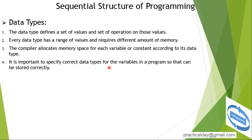It is important to specify the correct data type for a variable in a program so that the correct value can be stored. If your variable's data type is integer, you cannot store a decimal point value. If your variable's data type is float or double, you store floating point or decimal values.